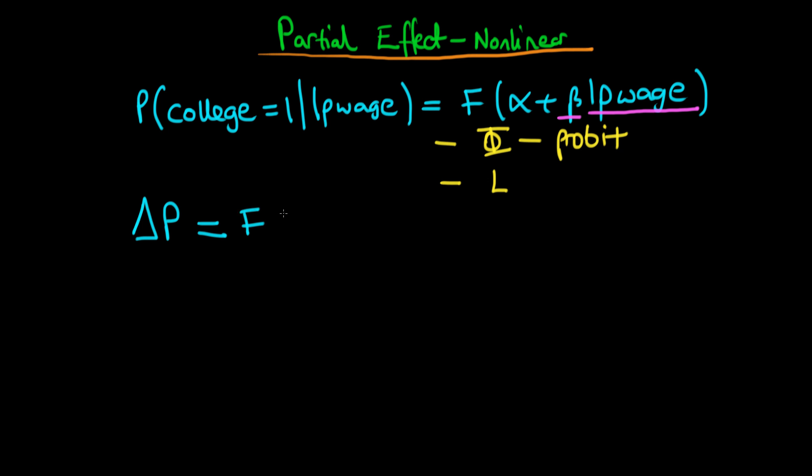What we need to do is we take off the original value from the value of F when log of parental wage has been incremented by one unit. So we have the function of alpha plus beta times the log of parental wage, and then we're going to get plus one times log of parental wage, which is just log of parental wage.